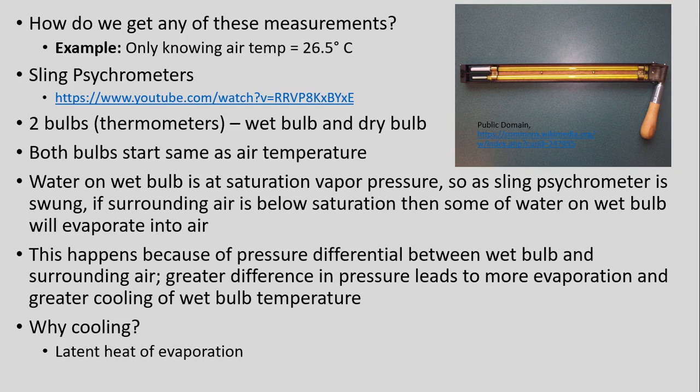We've made these calculations, but the question is: how do we actually acquire these measurements? Temperature makes sense from a thermometer, but if we only know our air temperature is 26.5°C, how can we acquire vapor pressure and water vapor measurements? The tool most commonly used is known as a sling psychrometer. There's an example on the right, and a linked video to explain it. The key idea is that this device has two bulbs or thermometers.